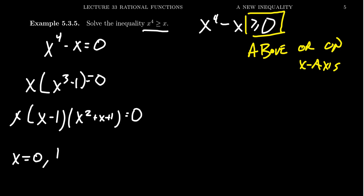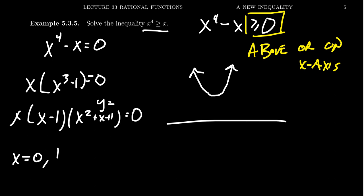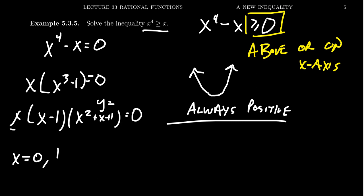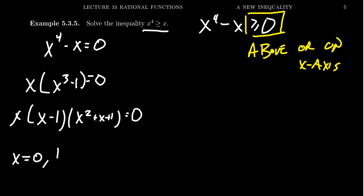Because the discriminant of this quadratic was negative, we see that if we just graph y = x² + x + 1, the graph is a concave-up parabola entirely above the x-axis — it's always positive. What that means is: whatever sign x(x − 1) has, multiplying by this always-positive quadratic doesn't change the sign. So whether we're above or below the x-axis depends entirely on the x(x − 1) portion. This is why we can ignore the non-real roots — they have no effect on the inequality.